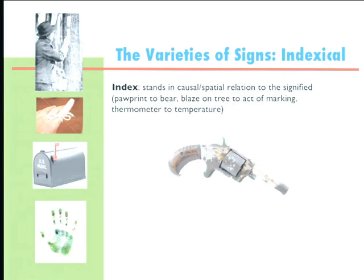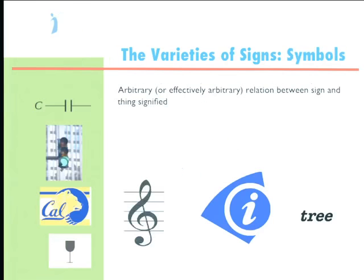And finally, symbols. These are arbitrary. The G-clef has no relationship between the form of that sign and the thing it signifies — that we're in a certain scale. Just the word 'tree' and so forth. These are all perfectly arbitrary relationships between signs and symbols.